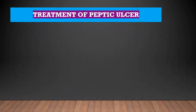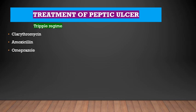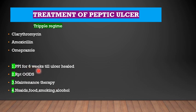Modern day treatment is the triple regime, which aims to heal the ulcer and eradicate H. pylori simultaneously. This includes two antibiotics and one PPI — commonly clarithromycin, amoxicillin and omeprazole or esomeprazole. This regime is given for 6 to 8 weeks minimum until the ulcer is healed. In some high-risk patients, a repeat OGDS may be necessary to ensure healing before stopping treatment. In elderly patients with multiple medical comorbidities, it may be necessary to maintain PPI for a longer period to prevent recurrence.